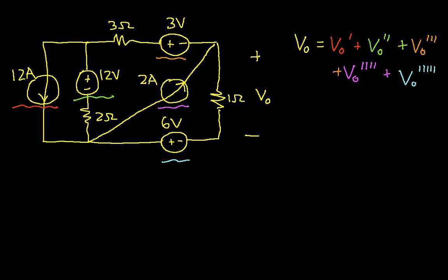So the idea is that I will set each of the sources to zero. We'll start by setting all of the sources except this 12 amp source to zero, and then find the voltage due to that 12 amp source, and we'll just repeat that for all the different sources. Once we get to that point, we just add everything up. So let's begin.